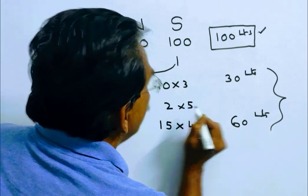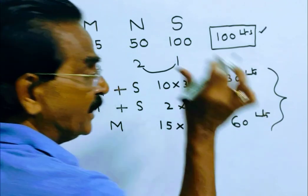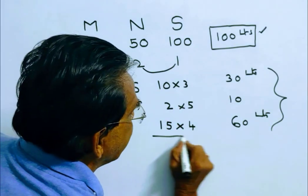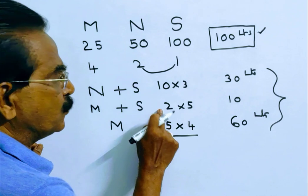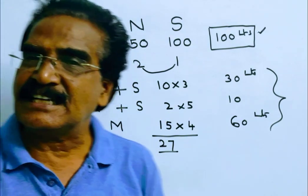So 2 into 5, that's 4 plus 1, 2 into 5, 10 liters. So 100 liters water is filled. Now the total time taken is 10 plus 2 plus 15, 27 minutes.